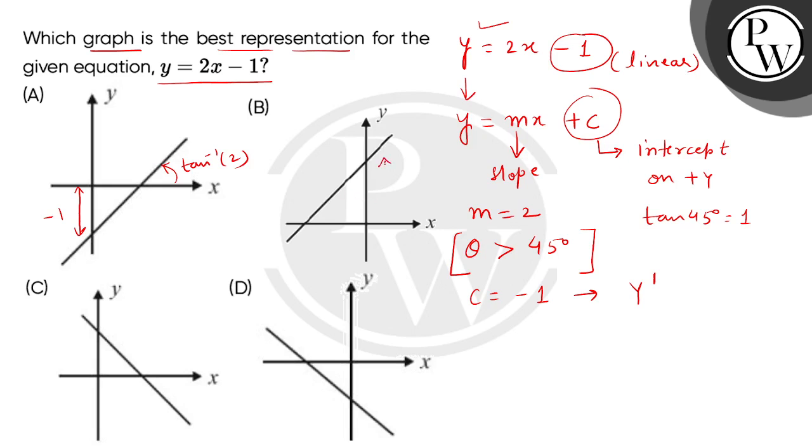If we check the other graphs, the intercept on the y-axis should be minus 1. Let's check again where the intercept on the y-axis is minus 1.